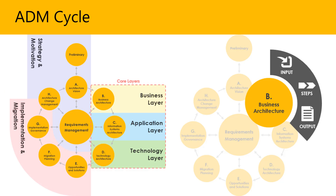The TOGAF ADM life cycle is iterative at three levels. First, cycling around the ADM is presented in a circular manner, indicating that completion of one phase feeds directly into subsequent phases. Second, there is iteration between phases — for example, returning to business architecture on completion of technology architecture. Third, cycling around a single phase itself: TOGAF supports repeated execution of activities within a single ADM phase as a technique for elaborating architectural content.